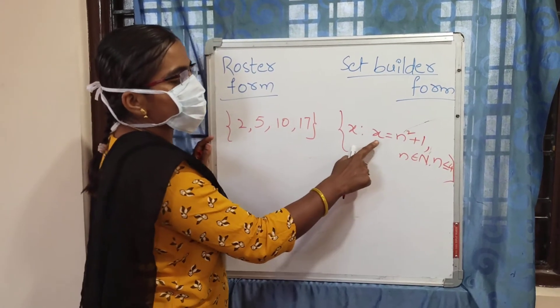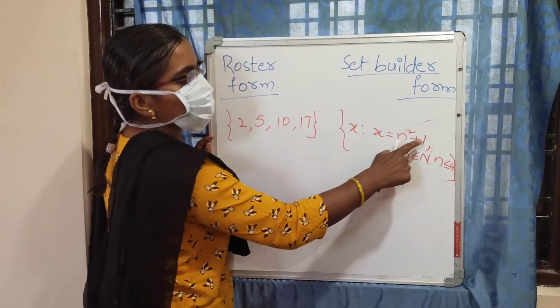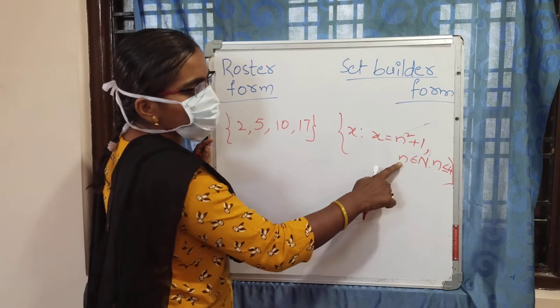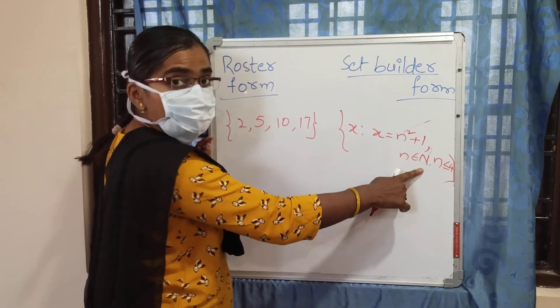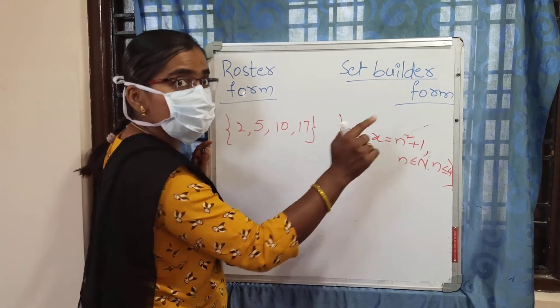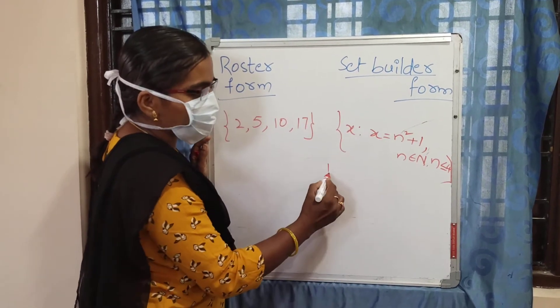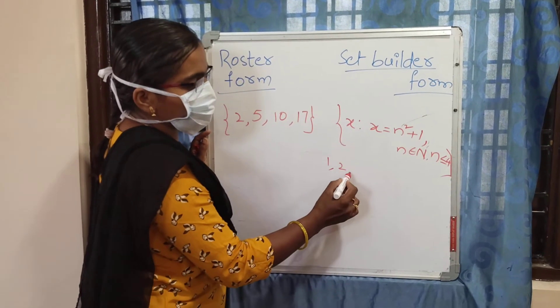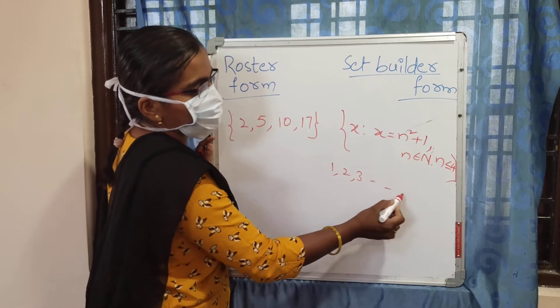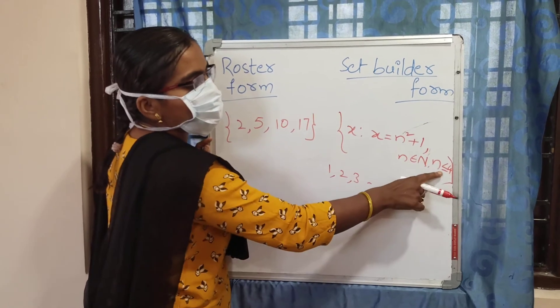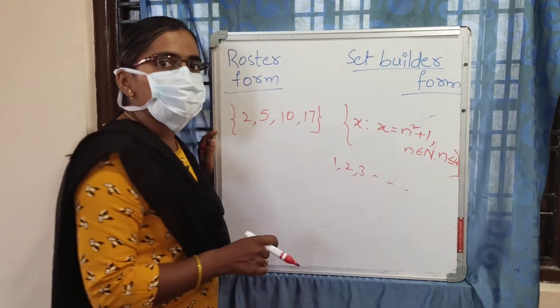We have x such that x equals N² + 1, where N belongs to natural numbers. Natural numbers start from 1, 2, 3, and so on. N is less than or equal to 4. Let's verify by substituting values.